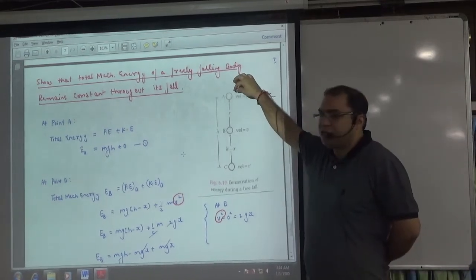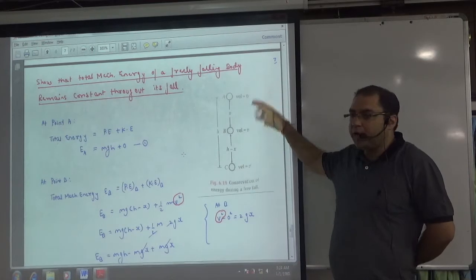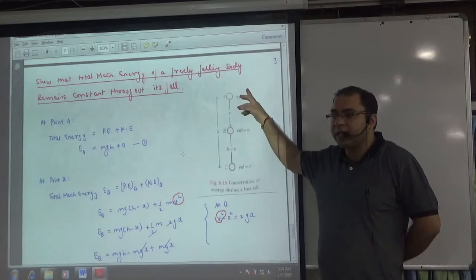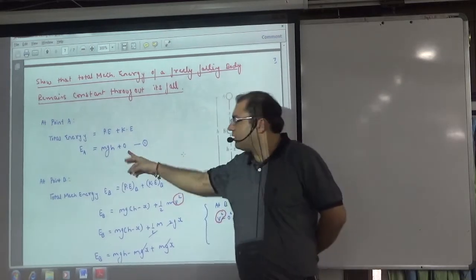Let us suppose that this object starts from here with initial velocity of 0. At this point, total potential energy is equal to mgh. Kinetic is 0. Total is mgh.